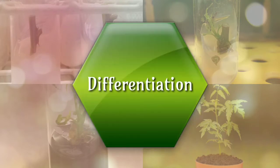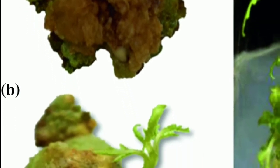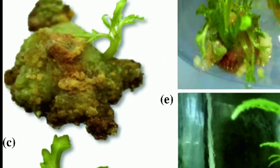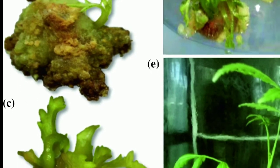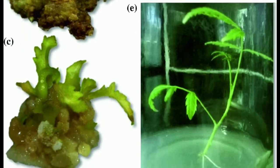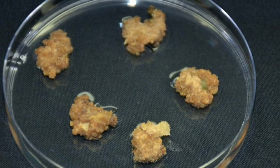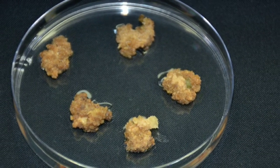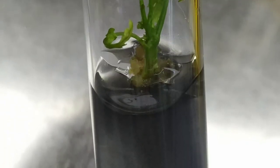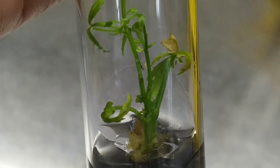The basic concepts of plant tissue culture are totipotency, differentiation, de-differentiation, and re-differentiation. Totipotency is the property of live plant cells that they have the genetic potential, when cultured in nutrient medium, to give rise to a complete individual plant. Differentiation is the process of biochemical and structural changes by which cells become specialized in form and function. De-differentiation is the process of reversion of mature tissue into a meristematic state leading to the formation of callus. Re-differentiation is the ability of the callus to develop into a shoot, root, or embryoid.